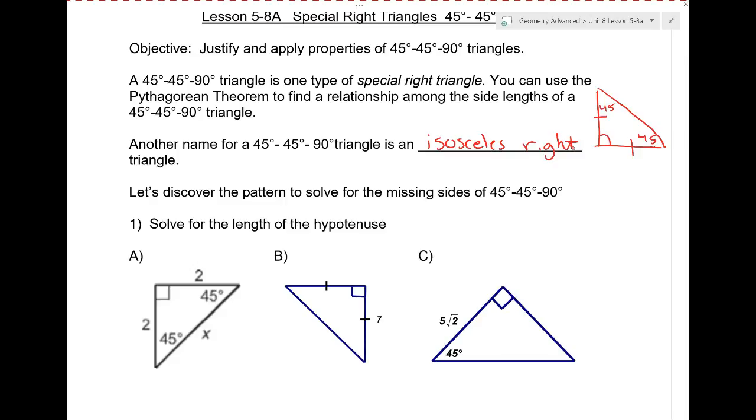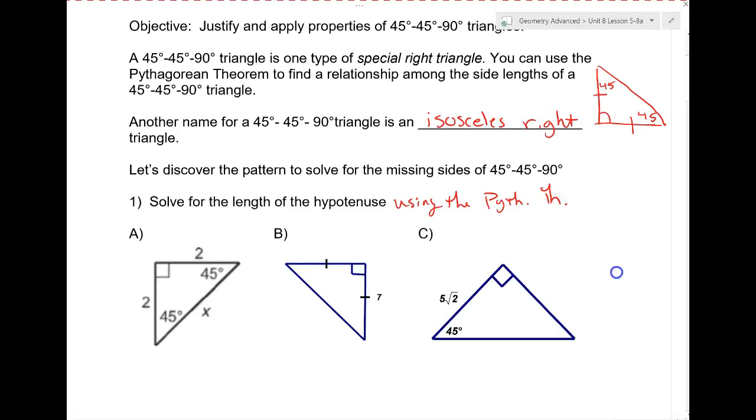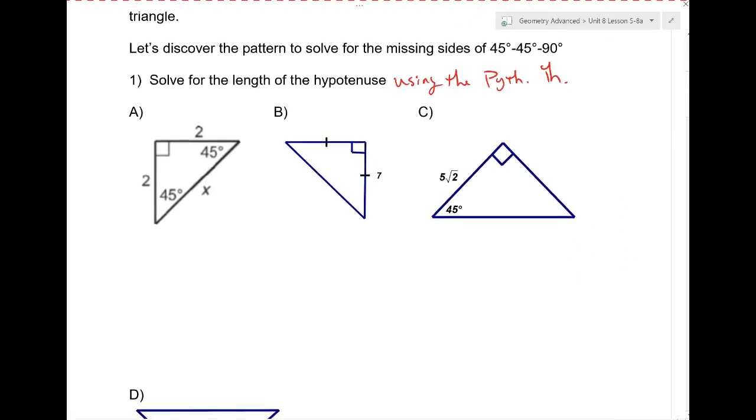I want us to figure out the pattern to solve for the missing sides. So I want you to solve for the length of the hypotenuse using the Pythagorean theorem. So I want to use the Pythagorean theorem on these. So on the first one, now we're not going to write a squared plus b squared equals c squared down again, right? We're going to go leg squared plus leg squared equals hypotenuse squared.